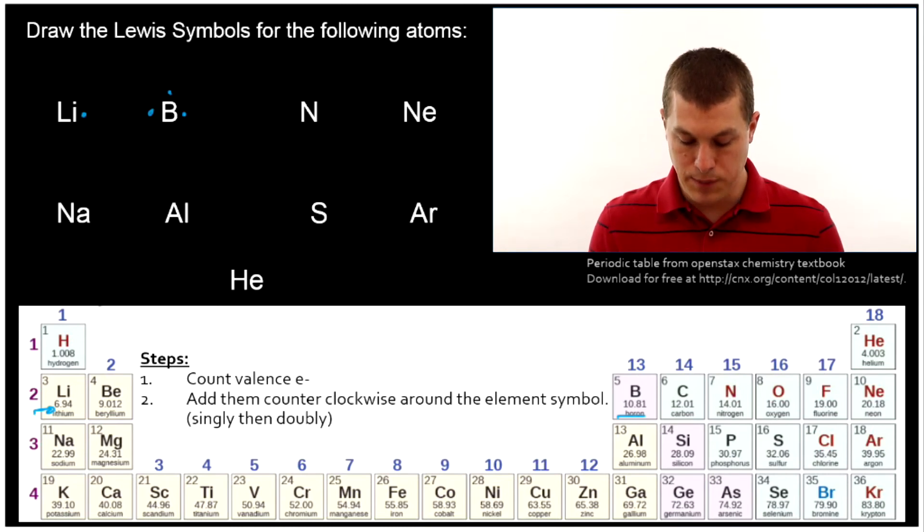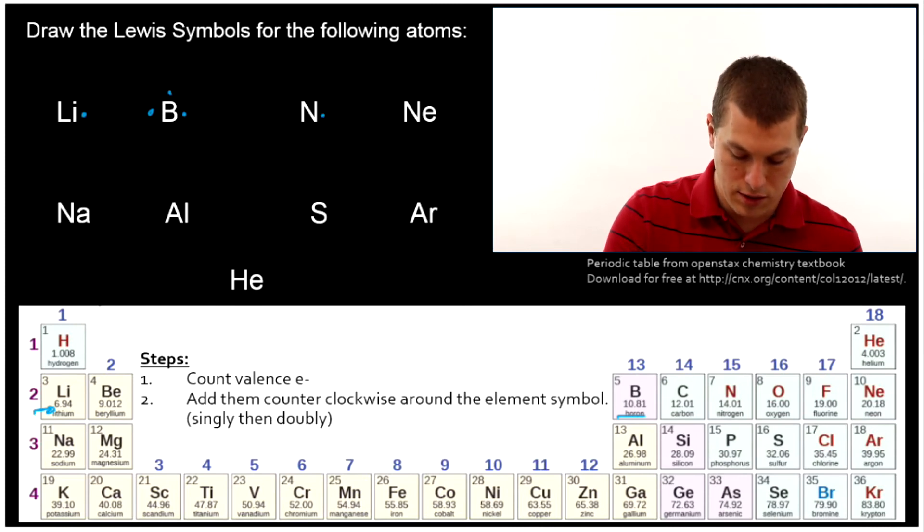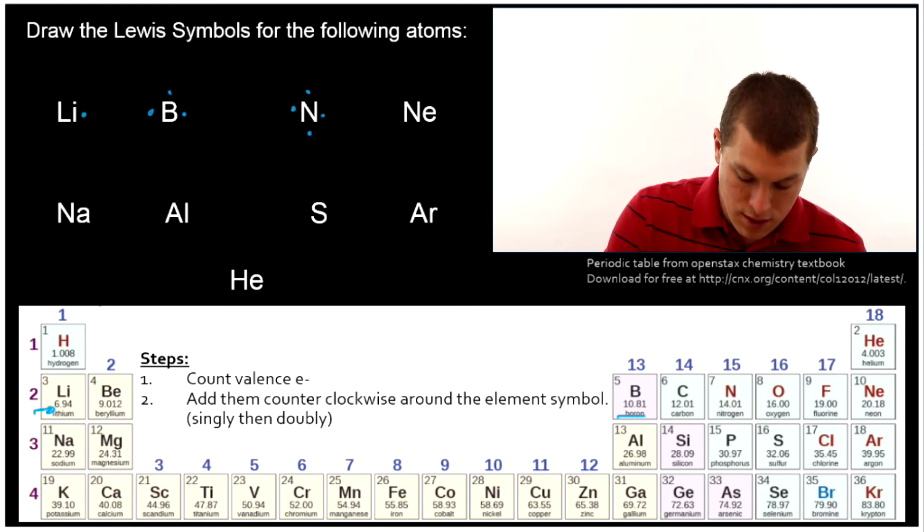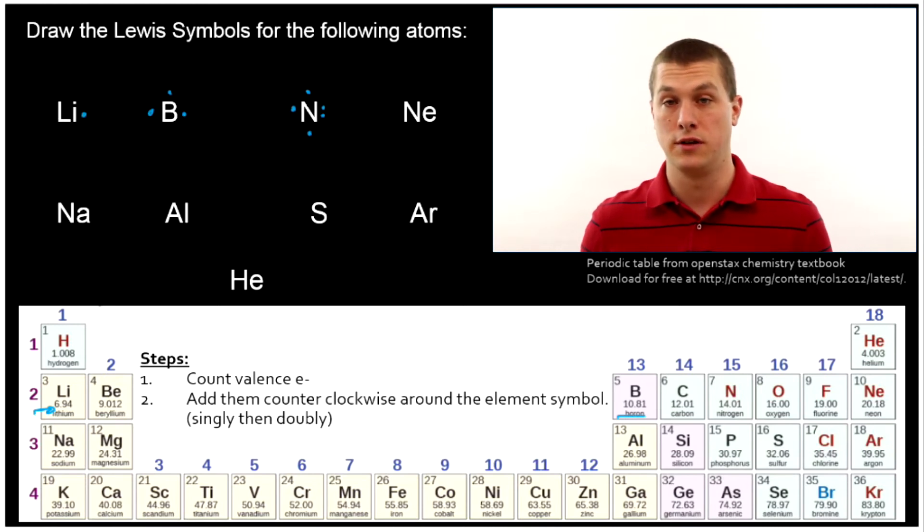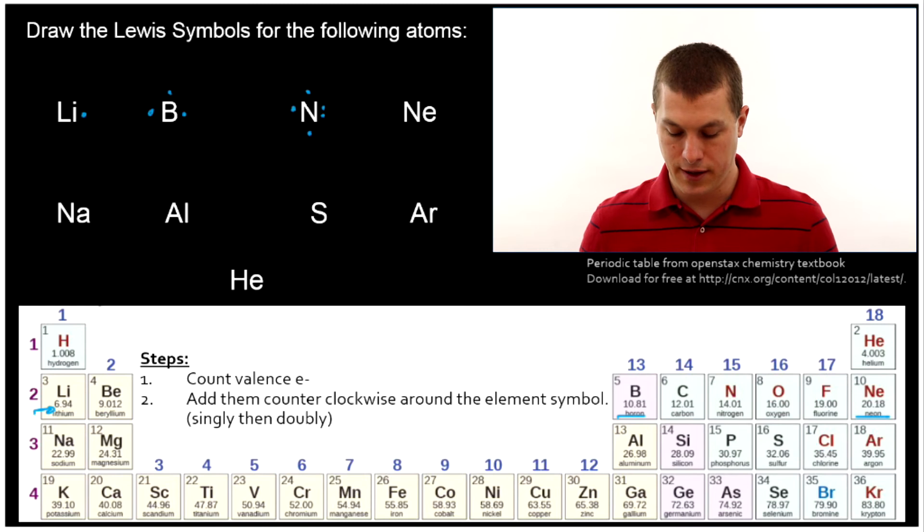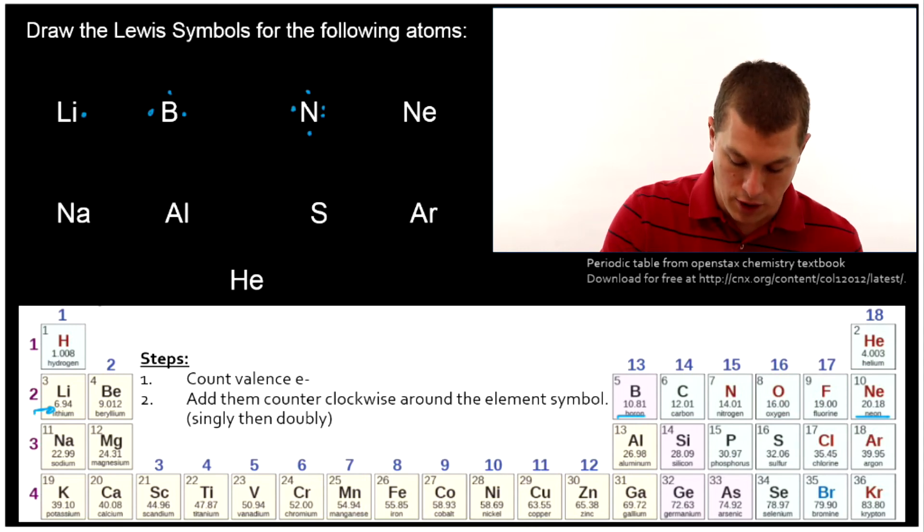Nitrogen is the fifth box over. So it has five valence electrons. So we'd go one two three four and now I'm all the way back around and I'm just going to make it a set of two electrons called a lone pair. Neon is the last box over here and if we count it all the way over we'd see that there's eight boxes to get to neon. It's also a noble gas so we shouldn't be surprised it has an octet already. And so I'm going to go ahead and draw one two three four five six seven eight.